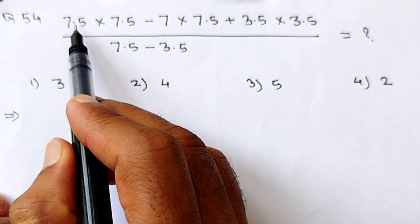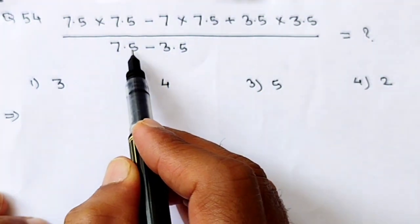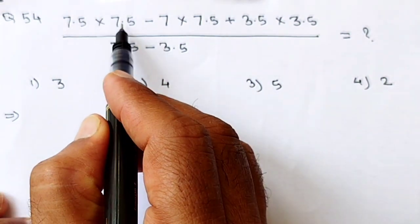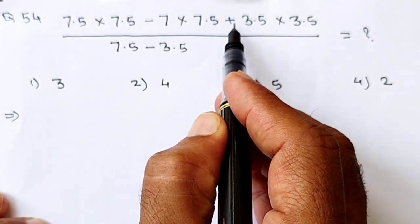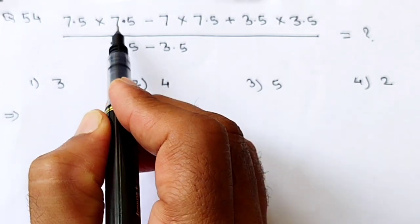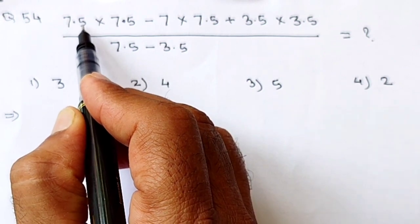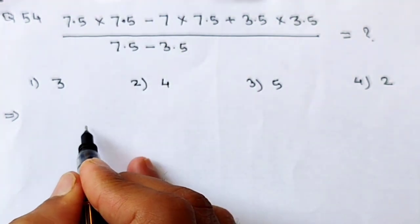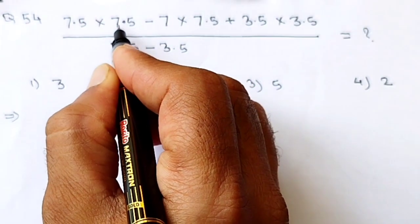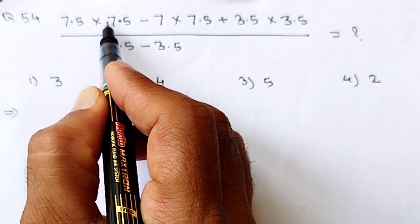Question number 54: (7.5 × 7.5 − 7 × 7.5 + 3.5 × 3.5) ÷ (7.5 − 3.5). It is very simple — just follow mathematical rules. There is one trick: for numbers ending in .5, the square of 7.5 is 56.25 — write 25 and multiply 7 by the next number 8, giving 56. So 7.5² = 56.25.